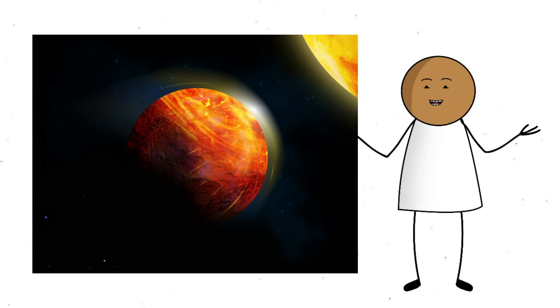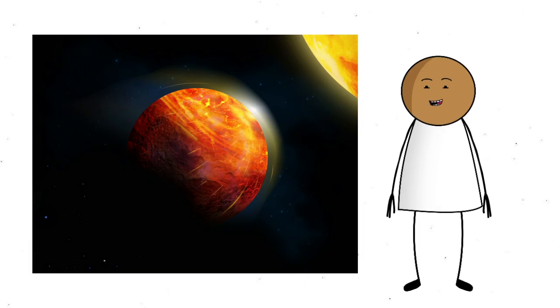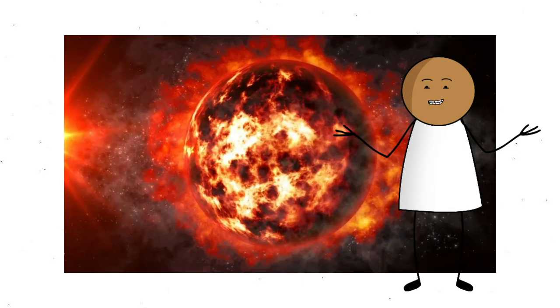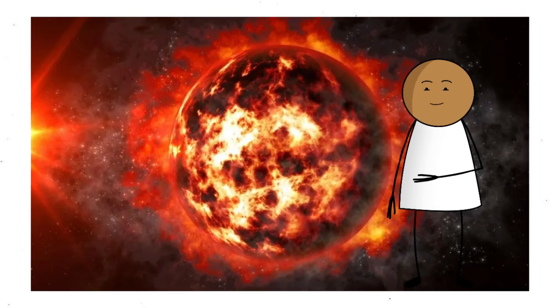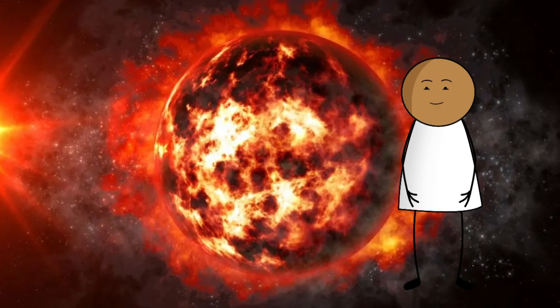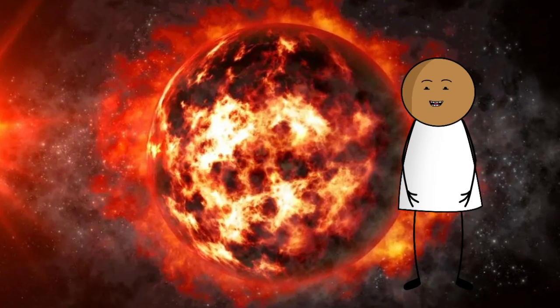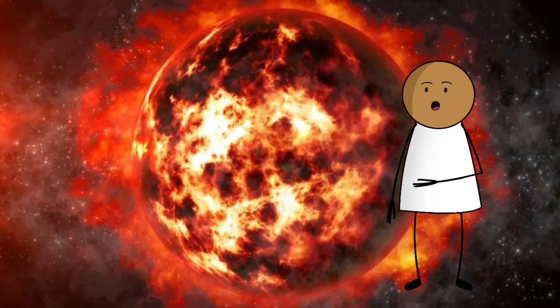The planet is tidally locked, so the same side always faces its star, and the heat imbalance creates wild atmospheric behavior. There's even speculation that volcanic activity on this planet is non-stop, like a lava lamp turned up to 11. Some models suggest that the entire surface could be shifting, bubbling, and reshaping itself constantly under pressure.